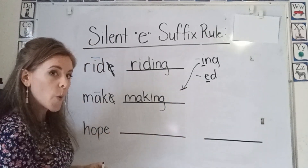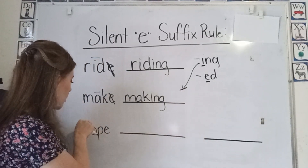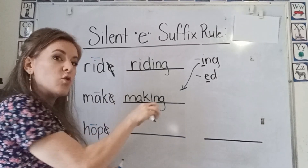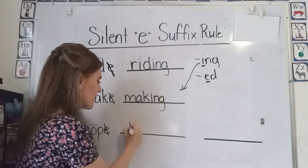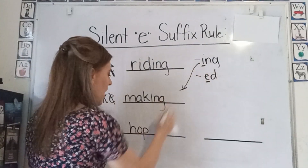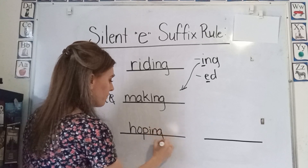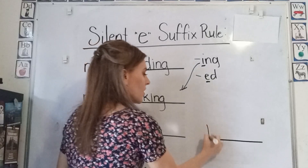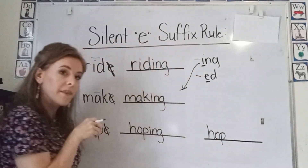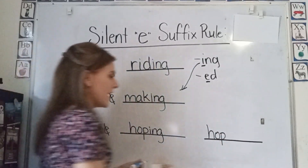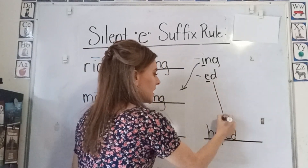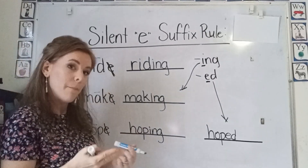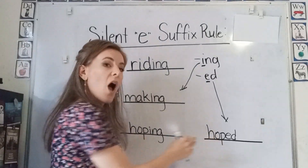And here we have 'hope.' We have a long o and a silent e, so we're going to drop the e and add our suffix. Hoping. And we can also drop the e and add our other suffix: -ed. Hoped. Hoping — 'I was hoping.' 'I hoped.'